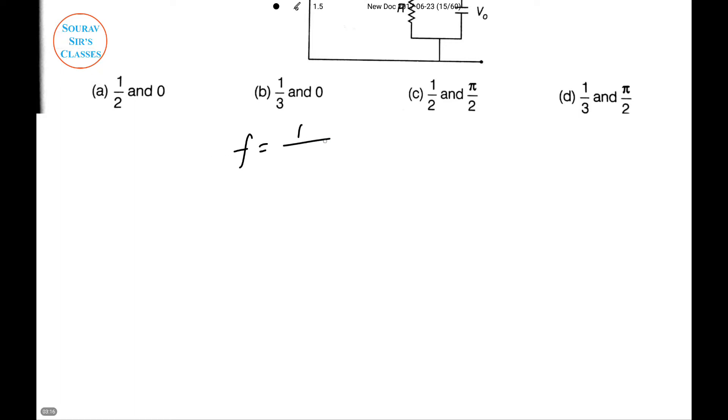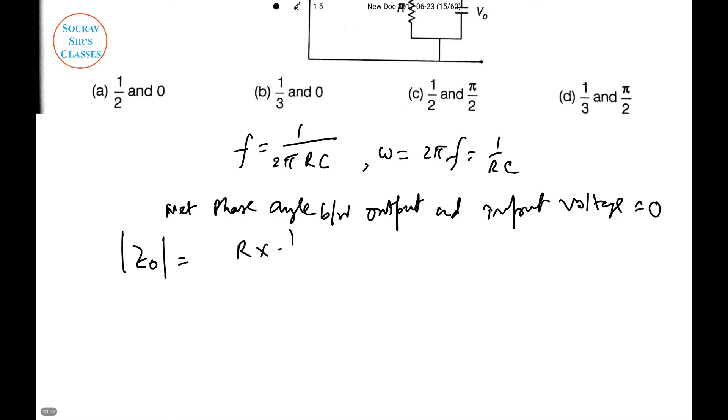The circuit consists of series and parallel RC networks which are in opposite phases, so therefore the net phase angle between output and input voltage equals 0. Now we have Z = R/√(R² + (1/ωC)²).